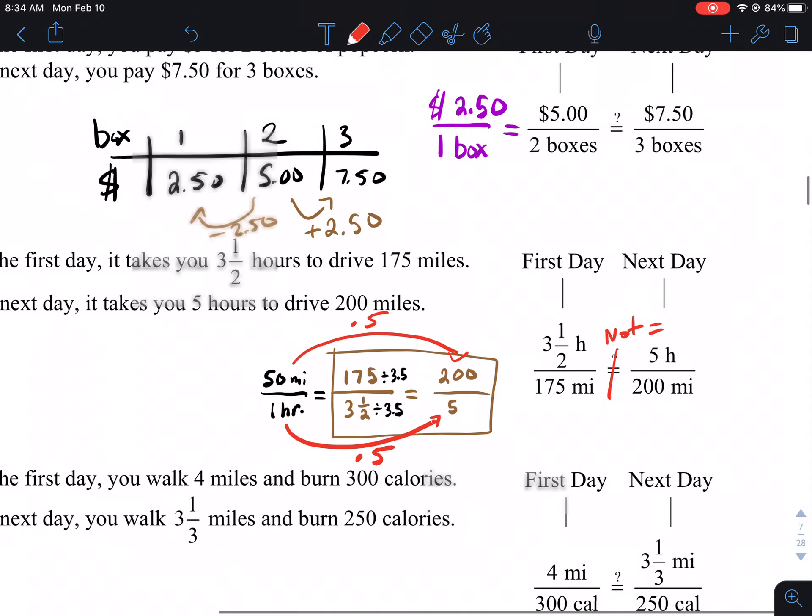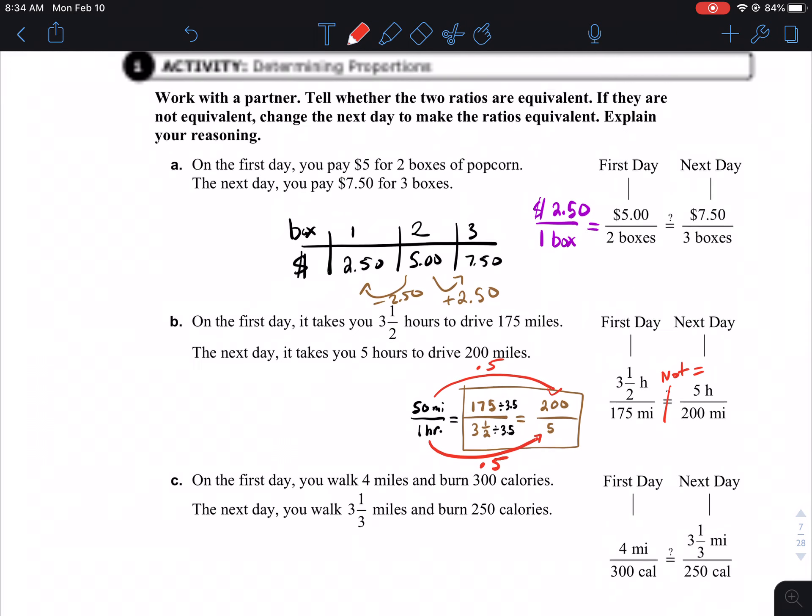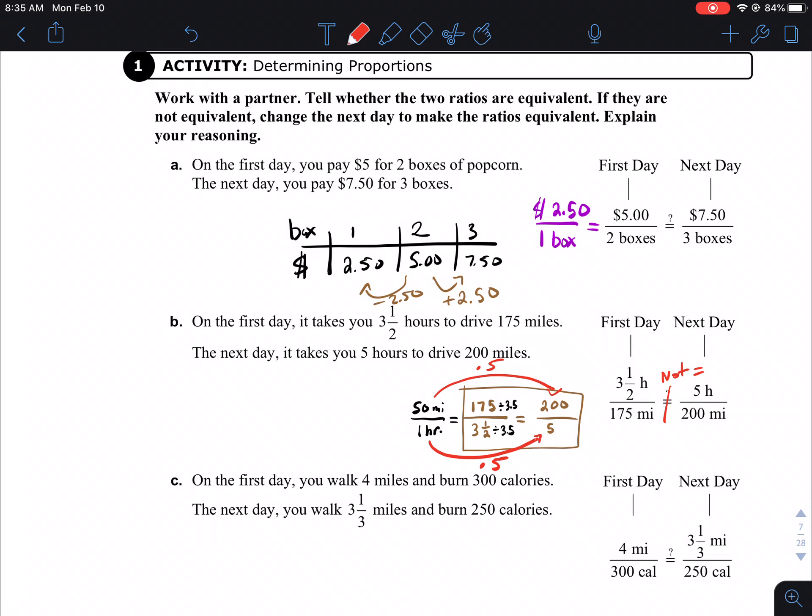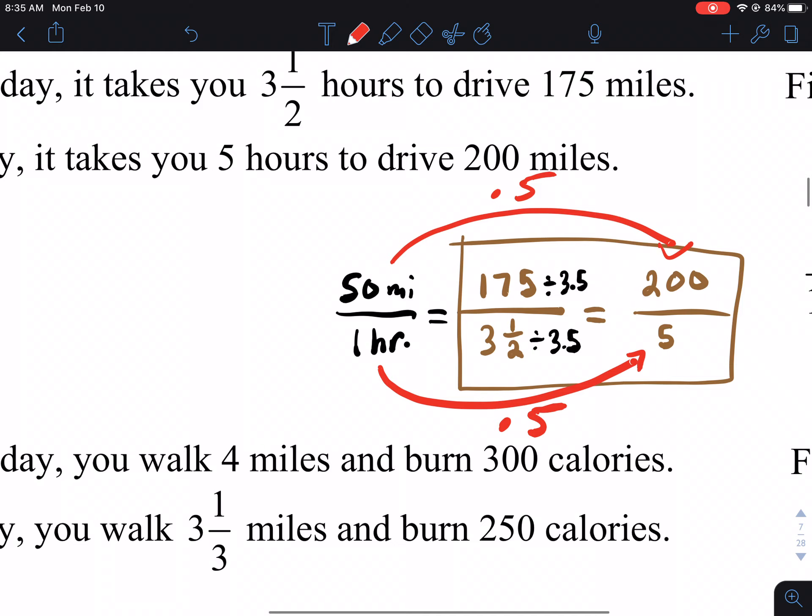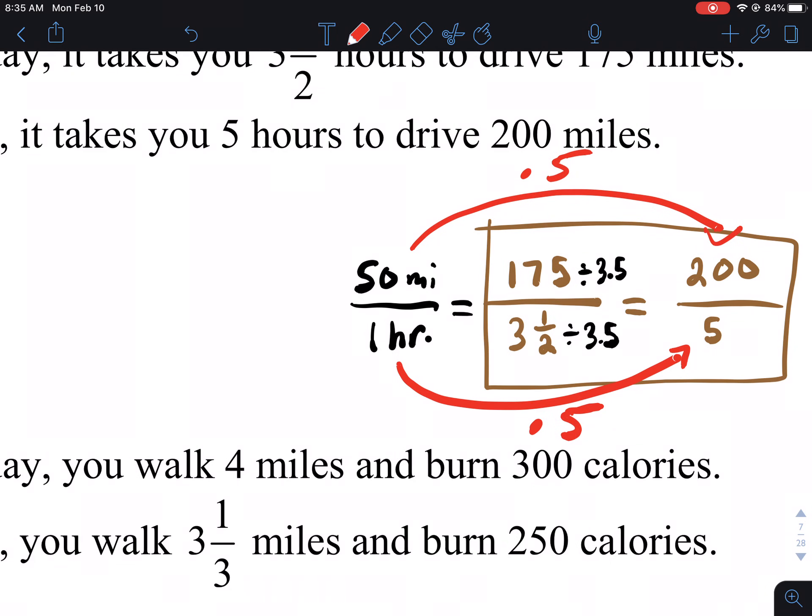Then it says to write the proportion that would be equal, right? What would make these two proportions equal, right? Well, if you're a proportion, you are equal. So what would make these two rates equal? And so here it is. So here's the answer you have to also write. It's 175, it's the original, divided by 3.5 hours. It has to equal 250 miles over five hours. That would be your answer. So I hope that makes a little bit of sense.